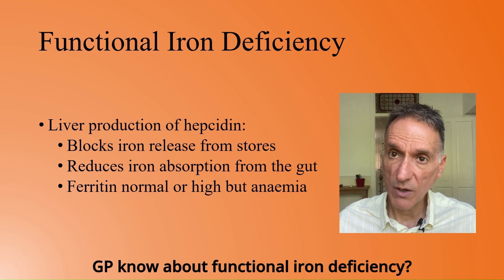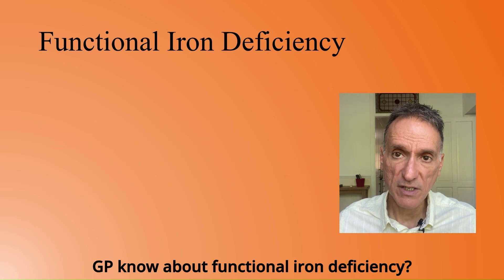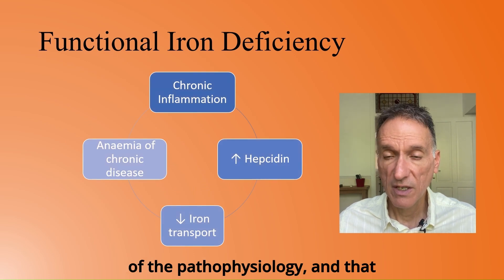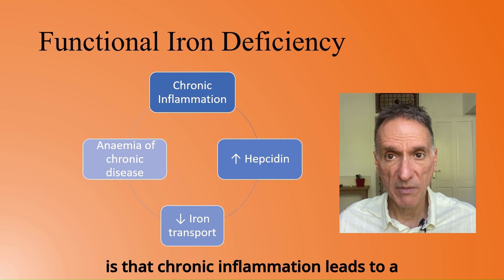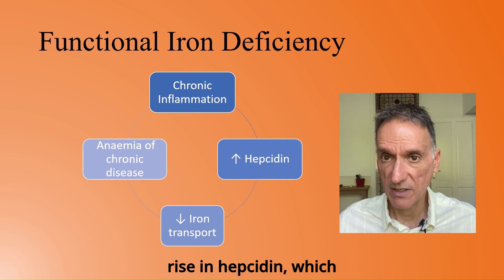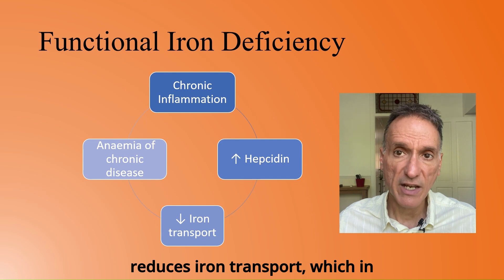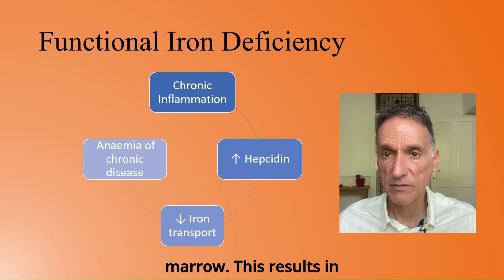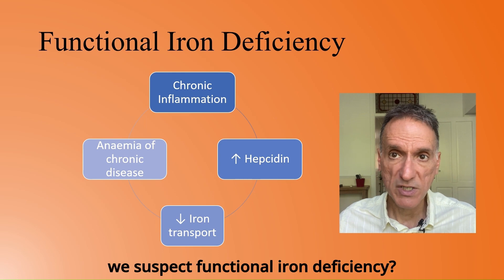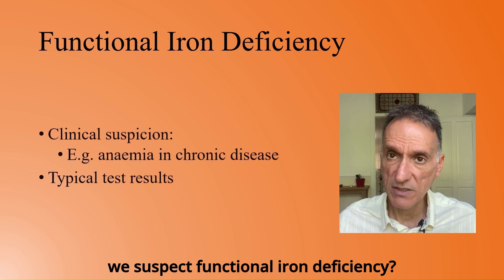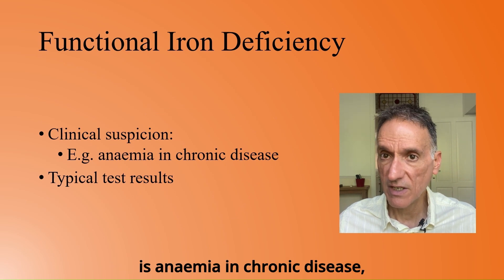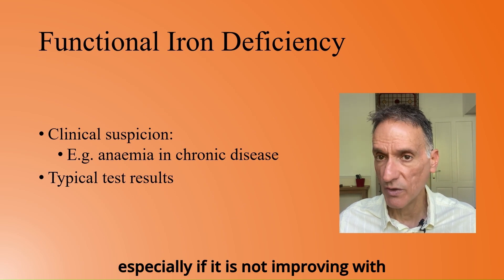What should GPs know about functional iron deficiency? Let's look at a very simplified version of the pathophysiology: chronic inflammation leads to a rise in hepcidin, which reduces iron transport, which in turn leads to less iron reaching the bone marrow. This results in anemia of chronic disease. We should suspect it clinically if there is anemia in chronic disease, especially if it is not improving with oral iron.